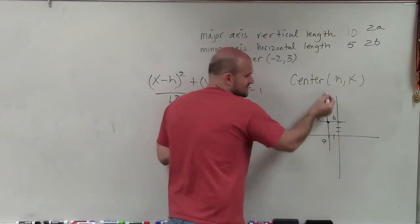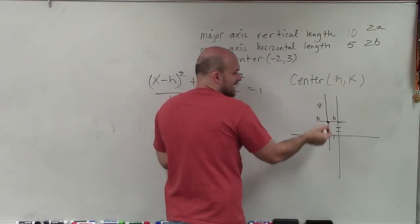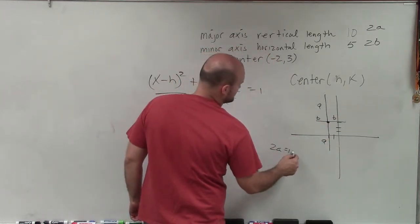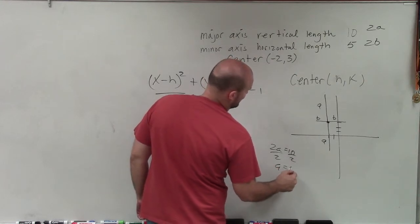So if I was looking for the total distance of the major axis, there'd be A plus A, which is 2a. So therefore, to solve for A, I just say 2a equals 10, divide by 2, A equals 5.